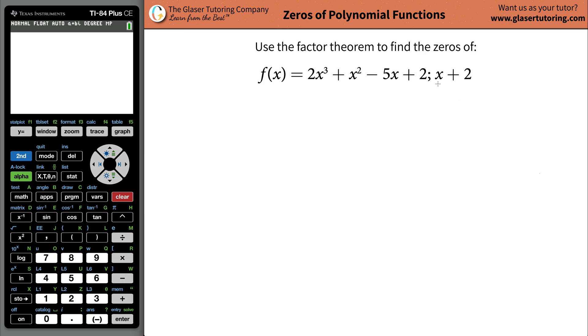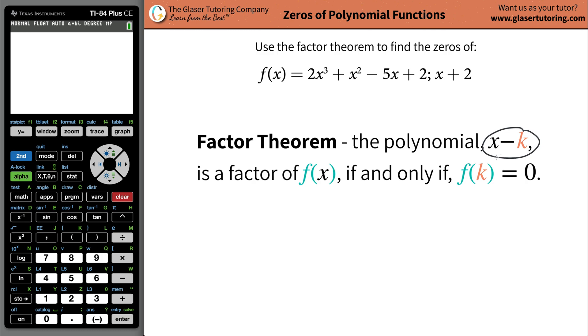So what the factor theorem basically states is as follows. The polynomial x minus k, which by the way is a linear function, is a factor of some larger polynomial, which is this in the problem,